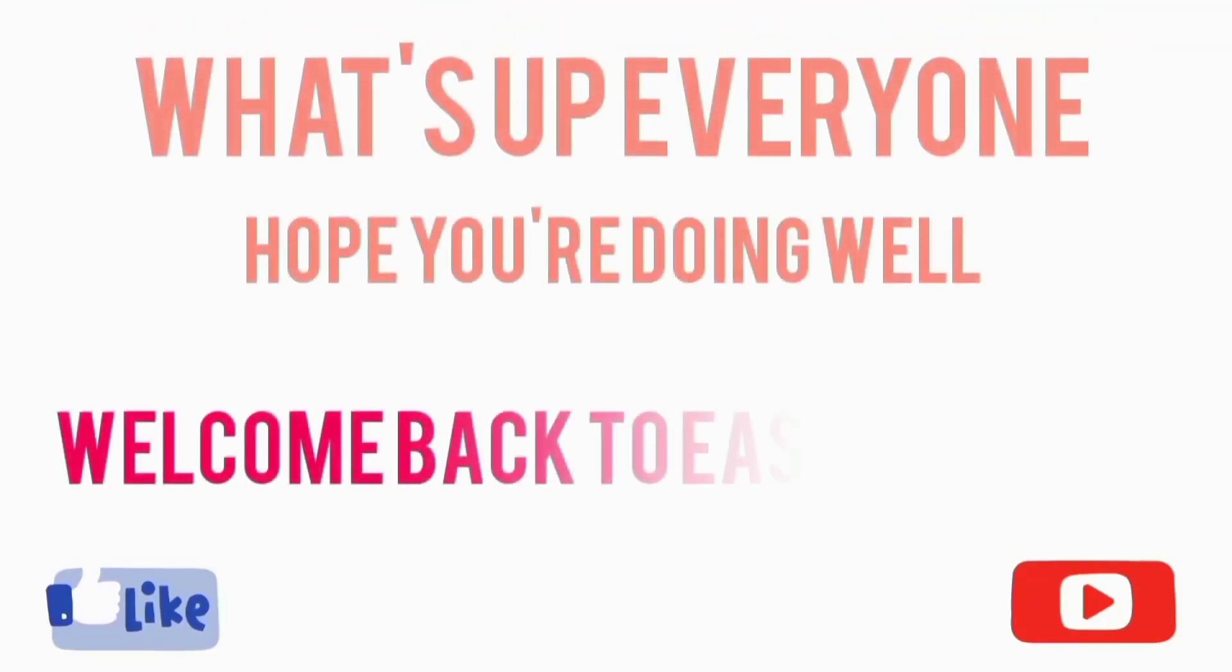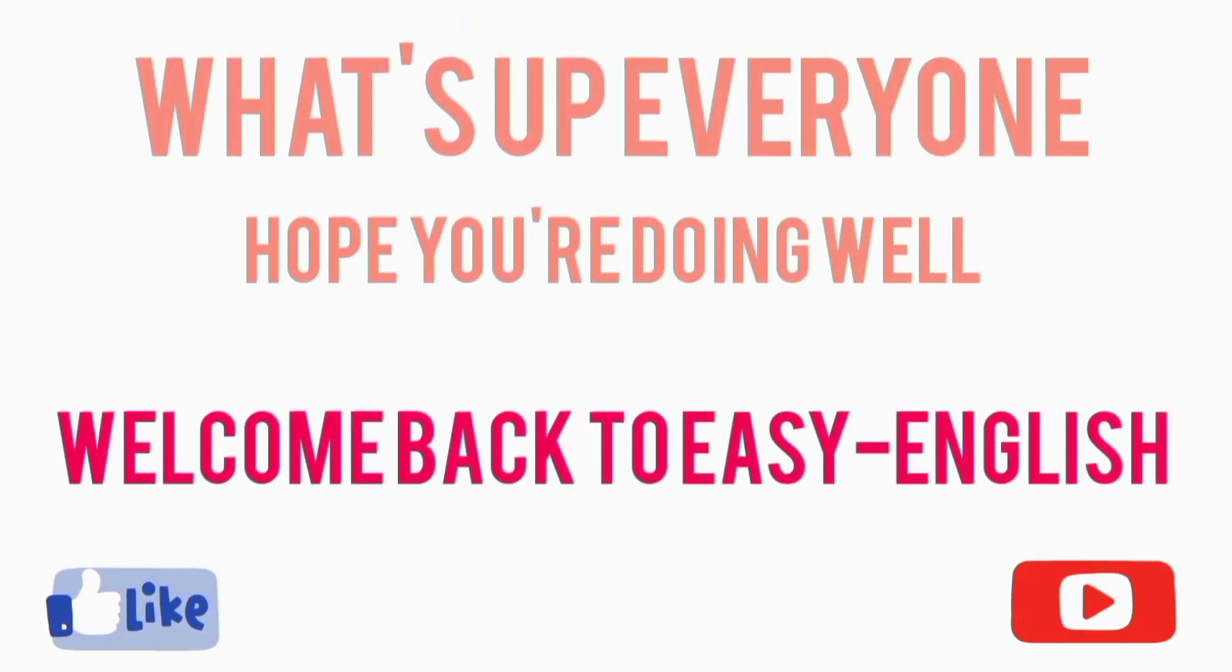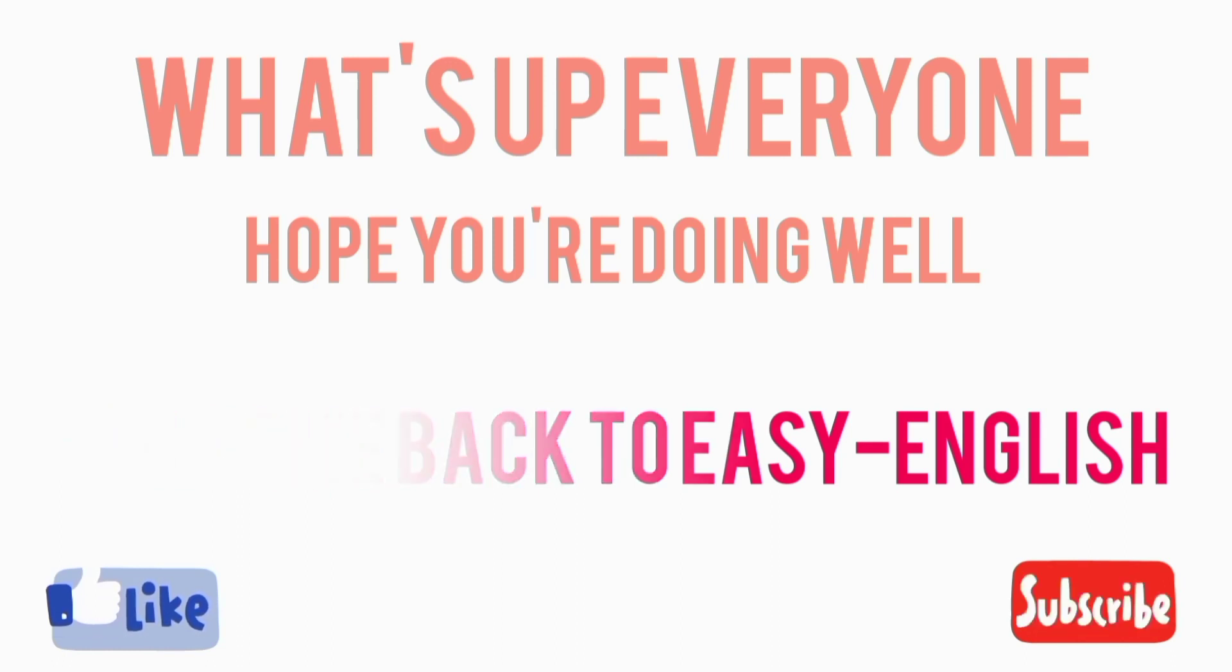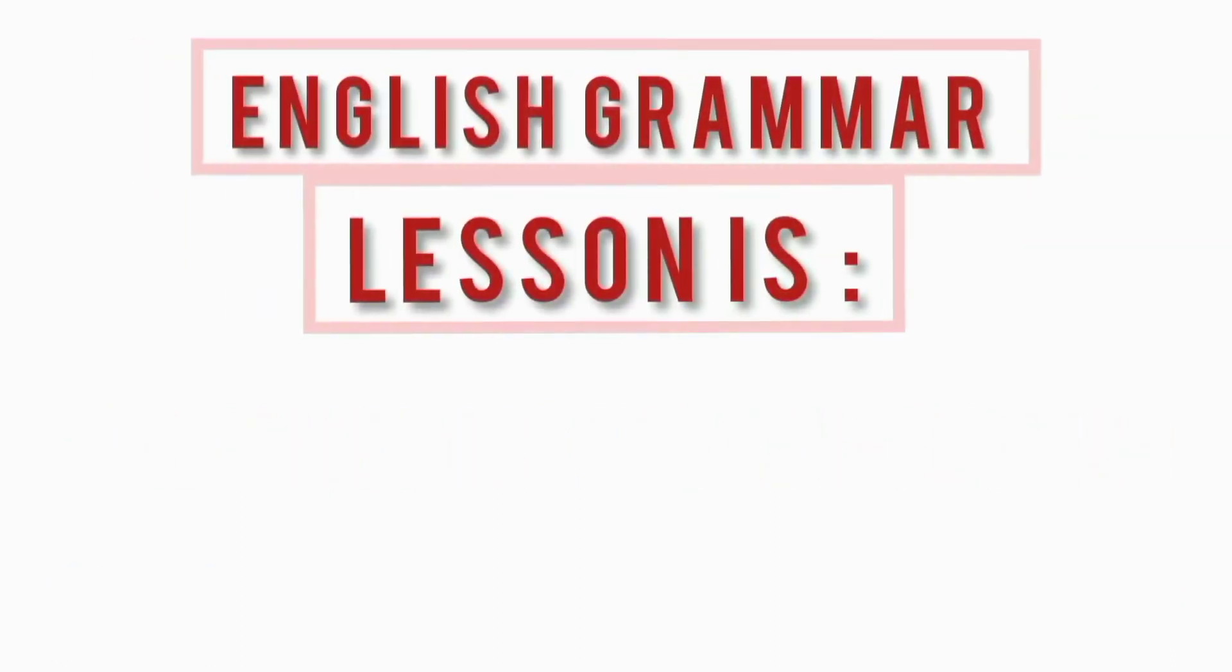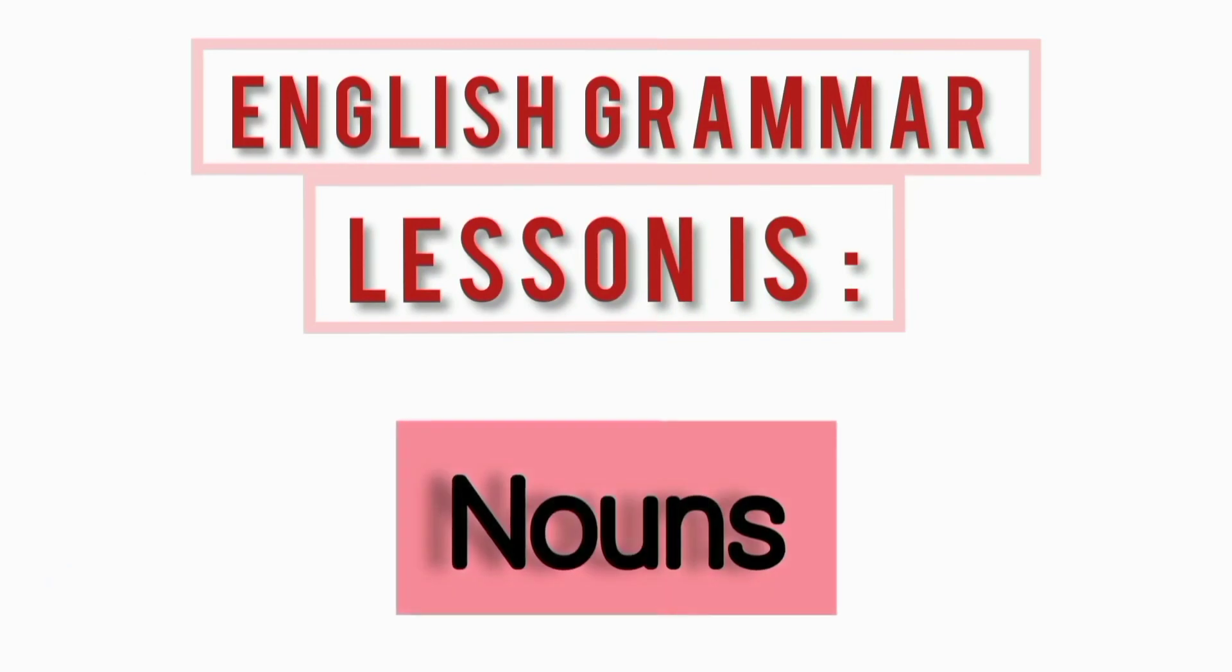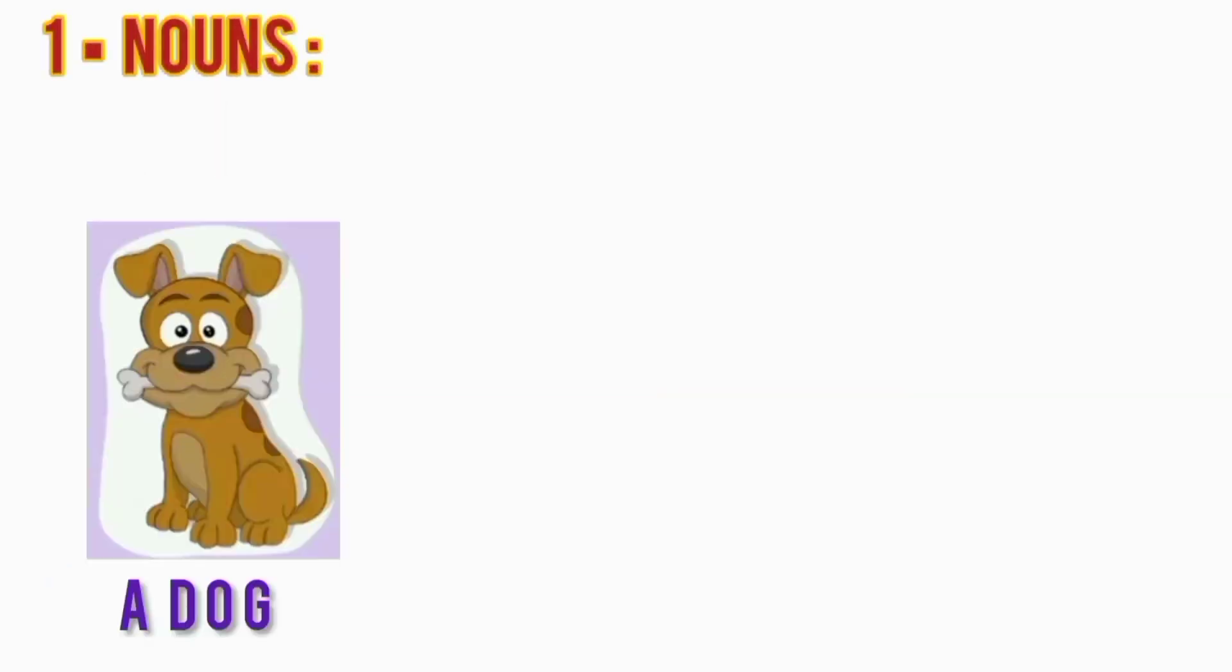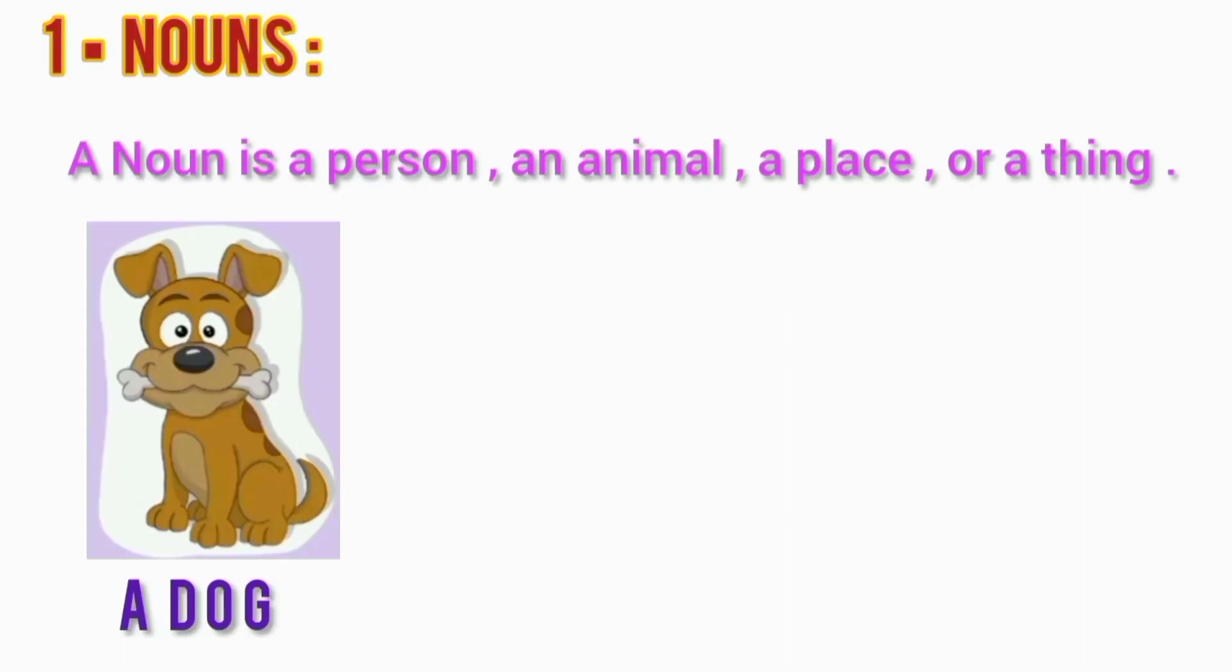Welcome back to Easy English channel. Today we have a grammar lesson, and today's lesson is nouns. First, nouns: a noun is a person, an animal, a place, or a thing.